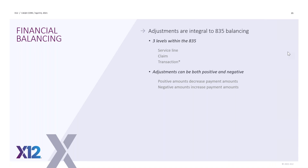It's typical — not 100%, but very typical — that you would see adjustments at the claim level, the 2100 loop, for institutional claims. As an institution, it's paid as a total amount, maybe based on DRG, so all dollars and adjustments are reported at the claim level. Whereas for outpatient or professional claims, everything has to be paid at service line — line by line. So it's very unlikely that you would see any adjustments at the claim level for professional claims.